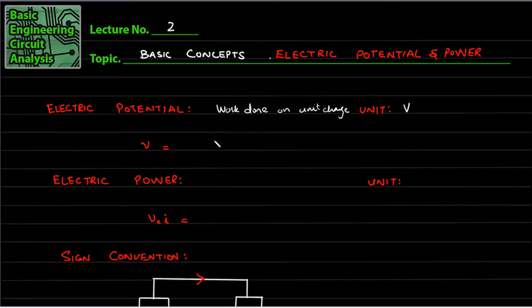So work done on unit charge, how we mathematically present it? This will be equals to dw divided by dq. So if we look at this, this unit will be joules per coulomb.